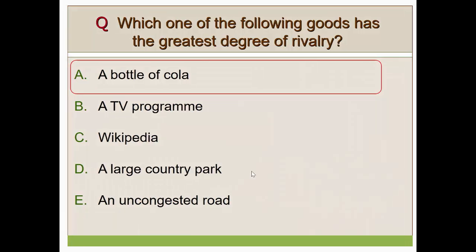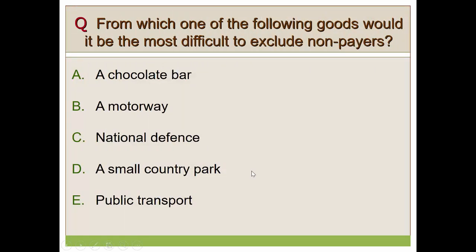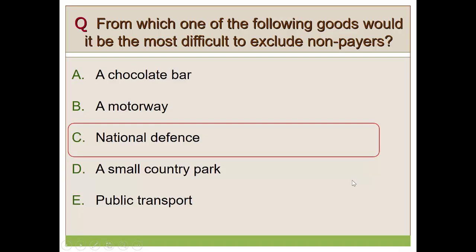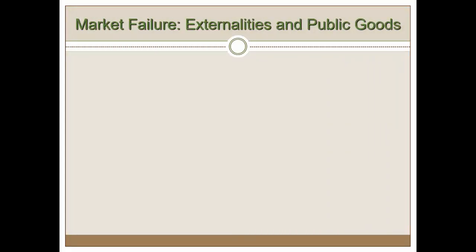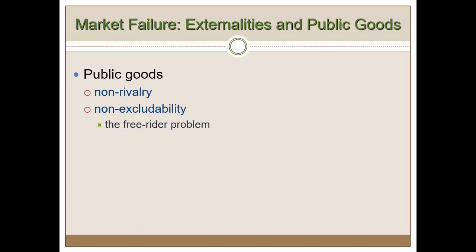The last question: from which of the following goods would it be most difficult to exclude non-payers? The answer is national defense. As mentioned, you can't exclude someone from using it — tourists within a country enjoy the same level of national defense as the British population without paying for it. If there is an external attack, British taxpayers pay for it, so it's difficult to exclude people already inside the country.